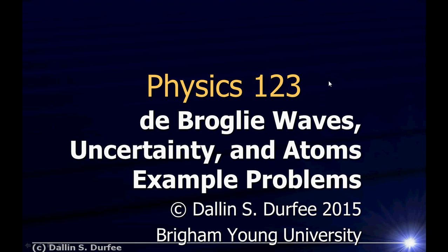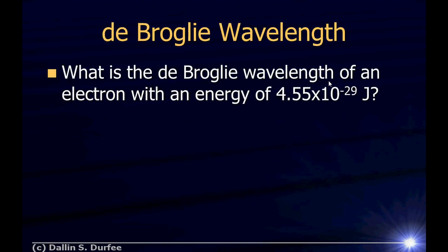Let's do some problems with de Broglie waves, uncertainty, and atoms. First off, what is the de Broglie wavelength of an electron with an energy of 4.55 times 10 to the negative 29 joules?